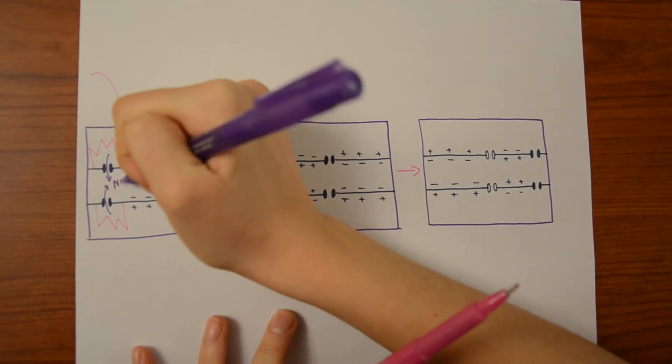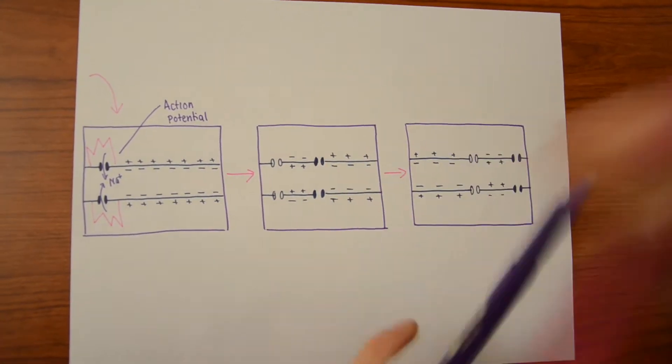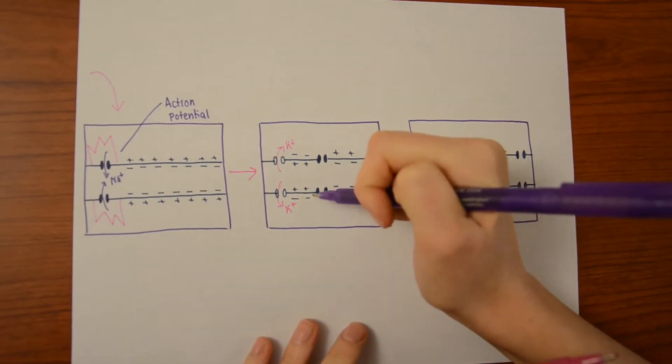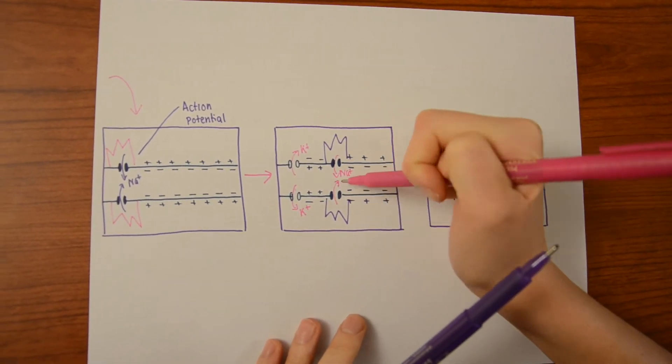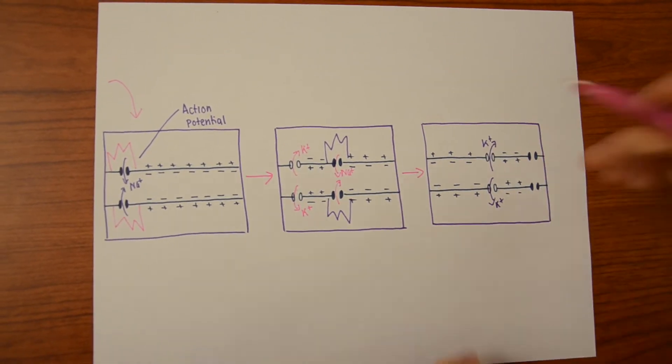In unmyelinated axons, the action potential moves along, opening ion channels allowing for sodium to enter the cell. Potassium then leaves to rebalance the axon, and this continues until the potential reaches the end of the axon.